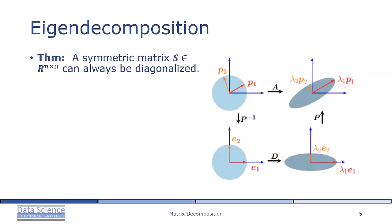So here's what's going on when we find an eigendecomposition. We start at the top left. P inverse performs a basis change from the standard basis into the eigenbasis. This identifies the eigenvectors in red and orange into the standard basis vectors. So we've rotated the circle.